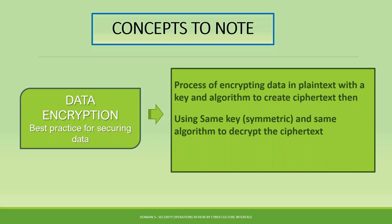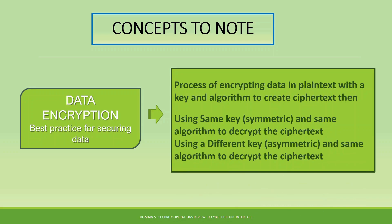If the key and algorithm used to encrypt the data is the same key and algorithm used to decrypt it, then it is called symmetric encryption. If the key used to decrypt is different from the key used to encrypt — converting from ciphertext back to plaintext using a different key — it is called asymmetric encryption. This can be very confusing, so go over it a few times to understand the concept well.